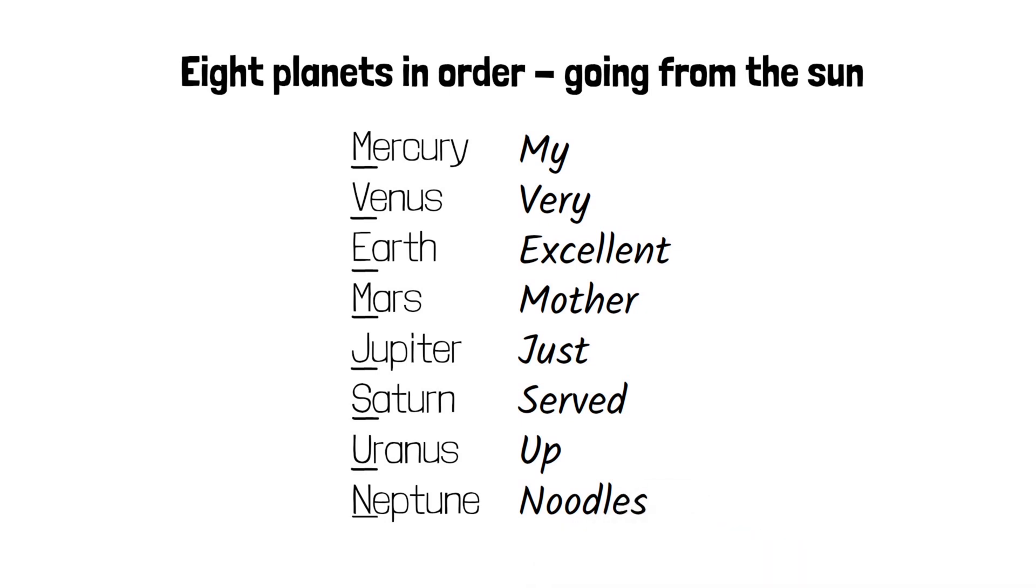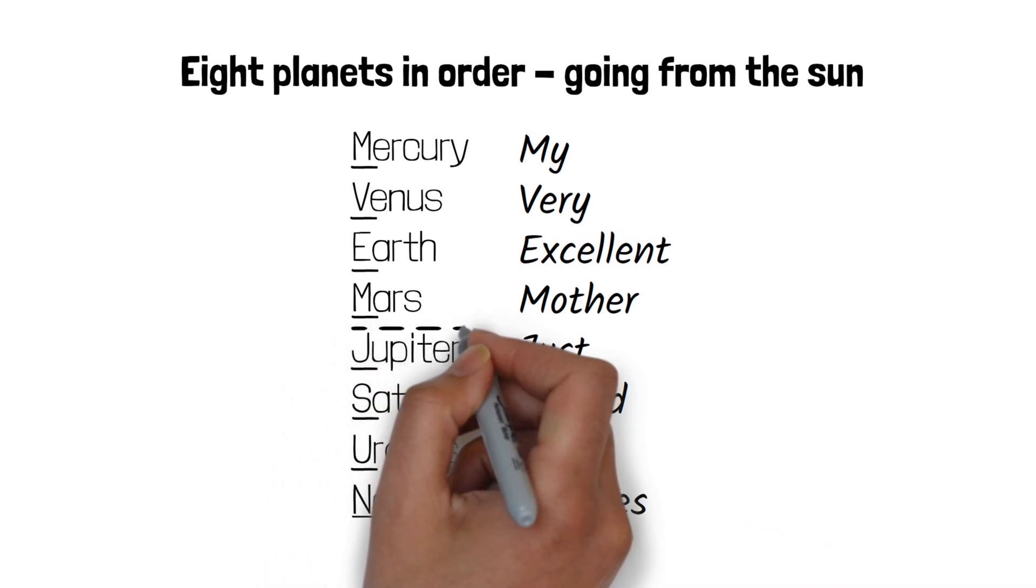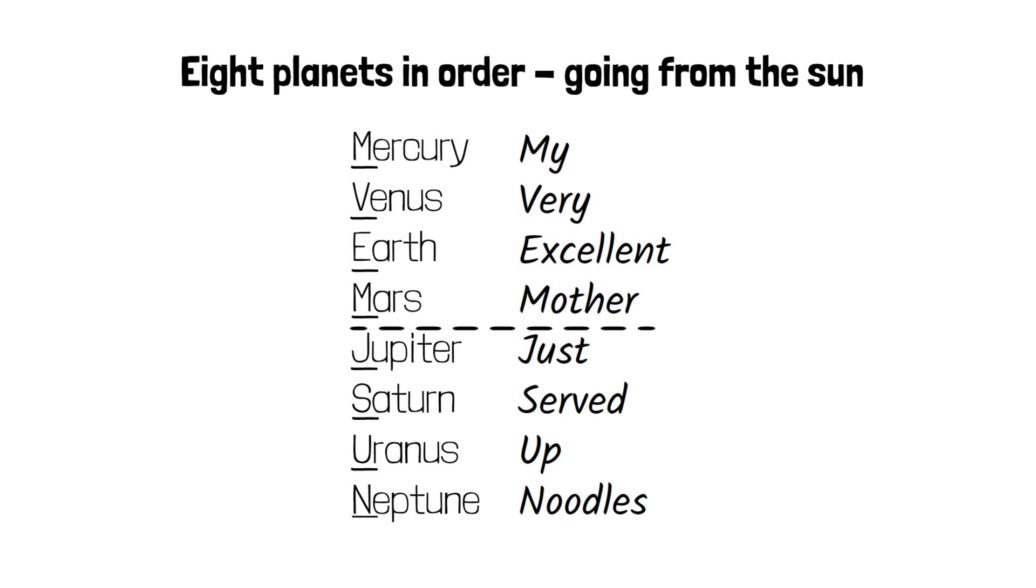If we then draw a dotted line between Mars and Jupiter that will remind us that this is where the asteroid belt is found.